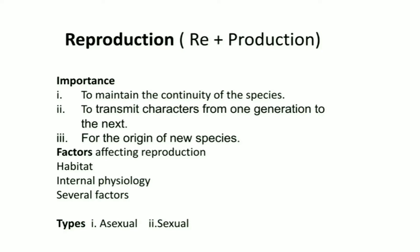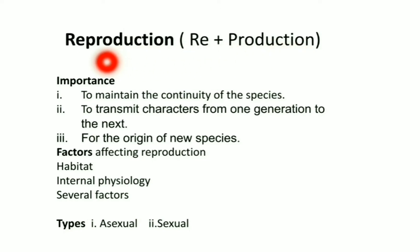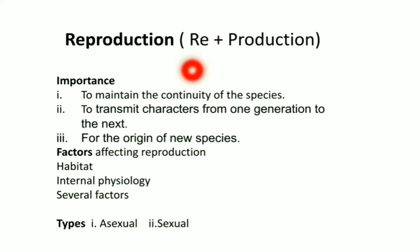Reproduction is made with two words: re and production. Re means again, production means to produce — means to produce again. So, reproduction is the biological process by which an organism produces young ones of its own kind.